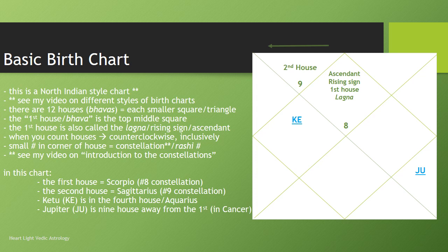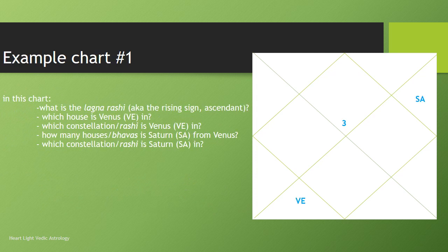Okay, so that's the lesson — let's try it out on a couple of charts. Here we go. So example chart number one, again mostly empty, but you know how to orient yourself, you know where the lagna is, the first house, ascendant, rising sign. This is your quiz — let's see if you got what I said in the first slide. From this chart, what is the lagna rashi, or the rising sign or ascendant? I put the answers to these questions on the last slide, so you have time to work this out — I'm not going to tell you right now.